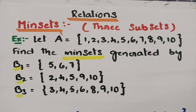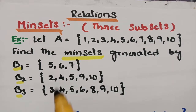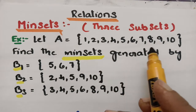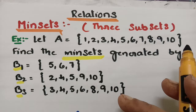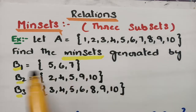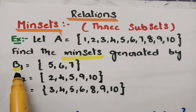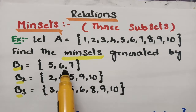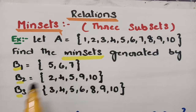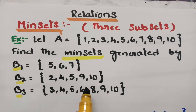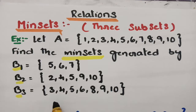Here is an example. Let A = {1, 2, 3, 4, 5, 6, 7, 8, 9, 10}. Find the MinSets generated by the subsets: B1 = {5, 6, 7}, B2 = {2, 4, 5, 9, 10}, and B3 = {3, 4, 5, 6, 8, 9, 10}. We have to find the MinSets.